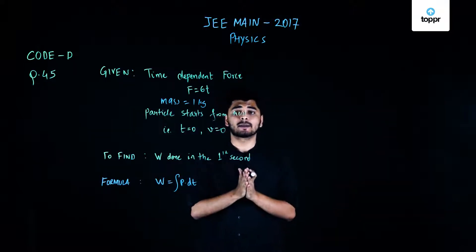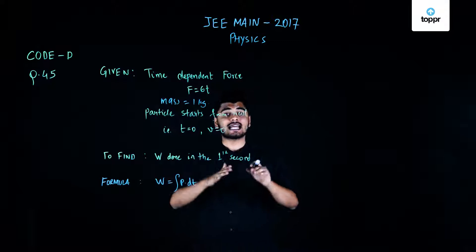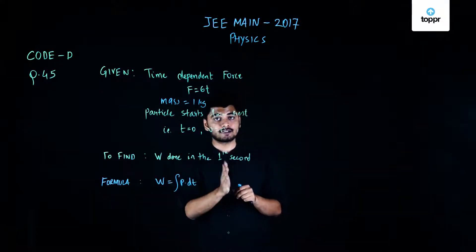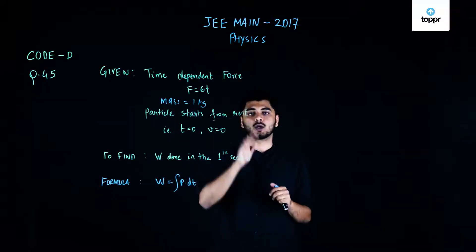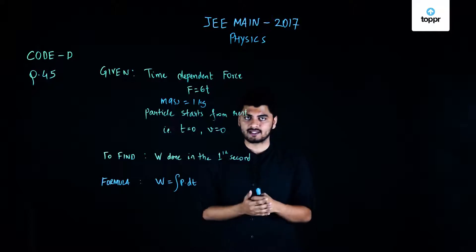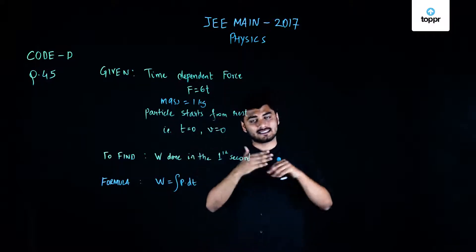In this question we have been given a mass of 1 kg which is acted upon by a variable force which is time dependent, and the variation of this force with time is given by f equals 6t. So my force is not constant, it's changing as the value of time is changing, and from the equation it's clear that it's increasing.